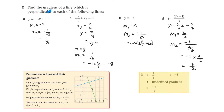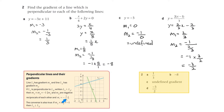Question 2: find the gradient of a line which is perpendicular to each of the following lines. The key relationship is m1 equals minus 1 on m2 — it's a negative reciprocal. If you have that relationship between the slopes of two lines, they are perpendicular.